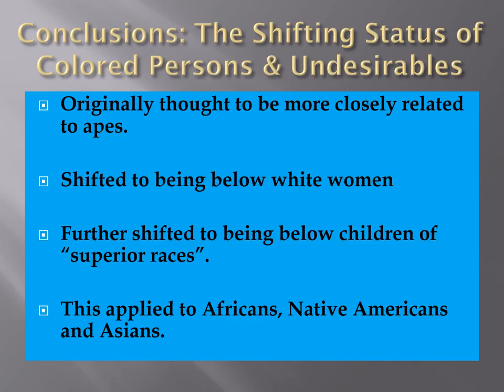During this period we see a shifting status of people of color and so-called societal undesirables. Originally, towards the start of the 19th century, people of color were thought to be more closely related to apes. But once evolutionary theory began emerging, scientists started to recognize that people of color are most likely human just like everybody else. Then began this notion that we need to measure features of intelligence and prove people of color are on a lower scale than white people.